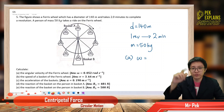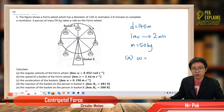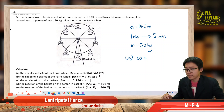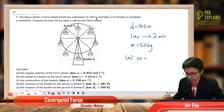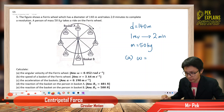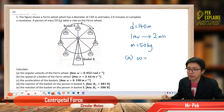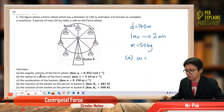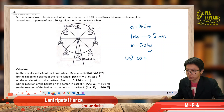Hi there! This is our fifth question in Centripetal Force, Circular Motion. Let us read the question together. The figure shows a Ferris wheel which has a diameter of 140 meters and takes 2 minutes to complete a revolution. A person of mass 50 kilograms takes a ride on the Ferris wheel. We are asked to find the angular velocity, the speed, the acceleration, and the reaction of the person in the basket at positions A and B.